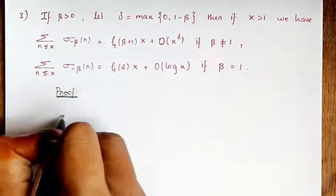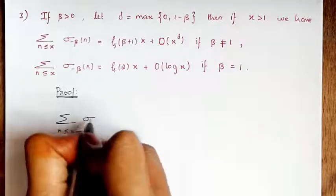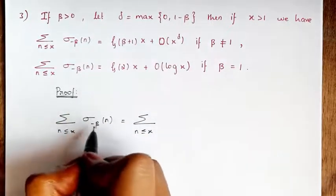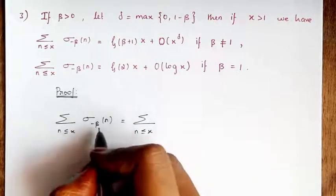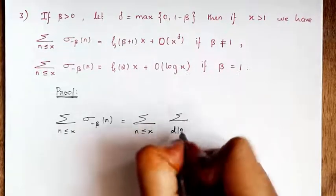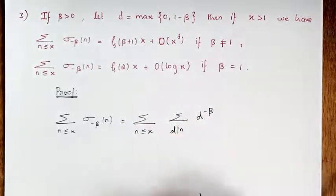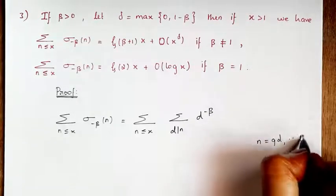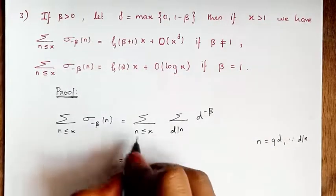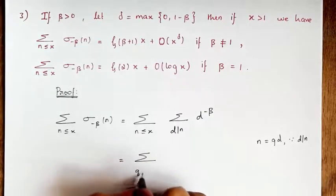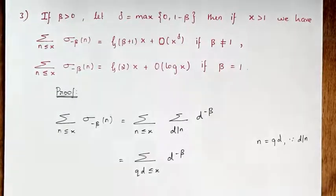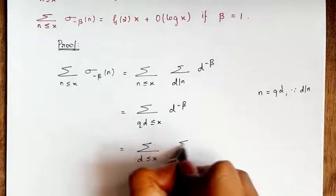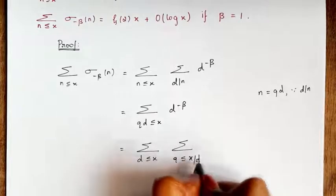Let's go to the proof. Take sum of n less than or equal to x of sigma minus beta of n. I already told you that the sigma function denotes the sum of divisors of n. So we can write this sigma function as sum of d divides n of d power minus beta. Also by the divisibility rule we can write n equal to qd since d divides n. By using this I can replace n by qd, so I get sum of qd less than or equal to x of d power minus beta. Now I am going to split this summation into two terms, so I get sum of d less than or equal to x into sum of q less than or equal to x by d into d power minus beta.